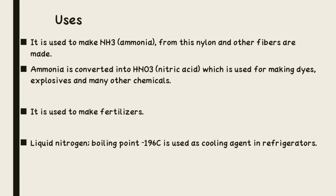The same ammonia made from nitrogen is also converted into nitric acid, which is HNO3 — another very important chemical. This nitric acid is used for making dyes, the color dyes used to color fabric, and is also used in the paint industry and for making explosives, which are used in bomb manufacturing, nuclear reactions, and many other chemicals.